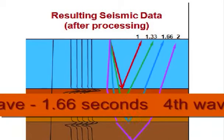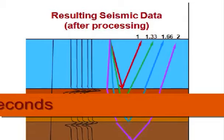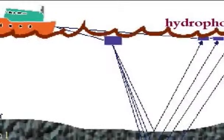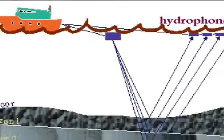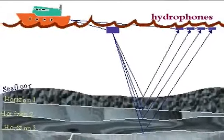The third, 1.66 seconds. And the fourth was 2 seconds. With the exact time, we can calculate the depth. Remember, the velocity of the wave changes as it travels through the different rock types. In denser rock, the waves travel faster.